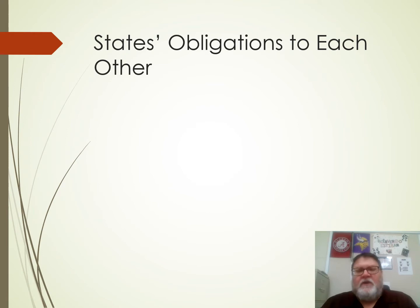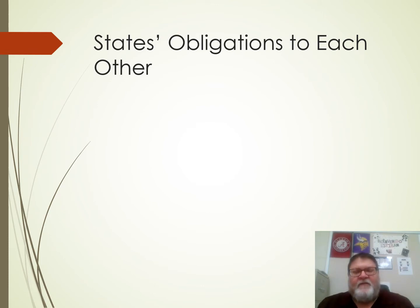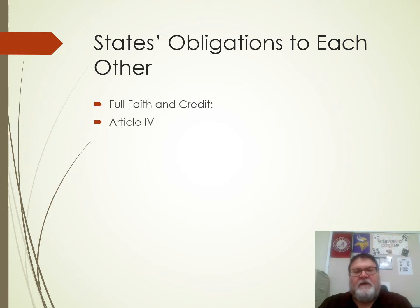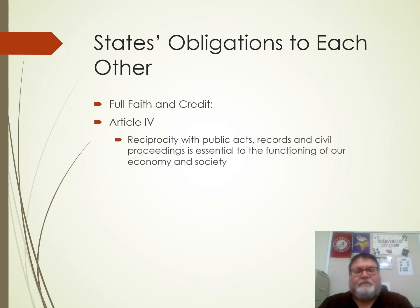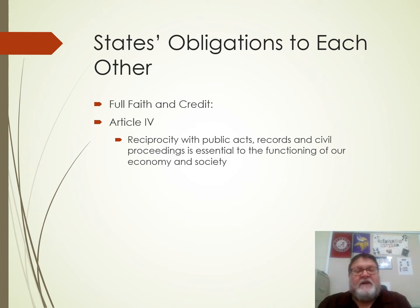First we start with states' obligations to each other. That is also part of the federal system — it's not just national government and state governments, it is the states working together as well and the obligations they have. Most of that comes from the Full Faith and Credit Clause, Article 4, and we're talking about the fact that states have to recognize the public acts, records, and civil proceedings in other states. Those are essential to a functioning economy and a society.